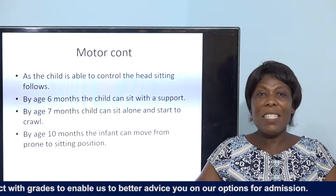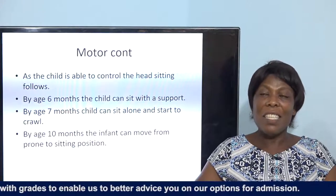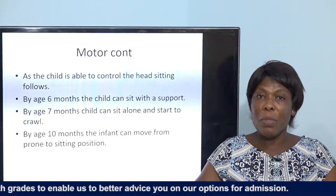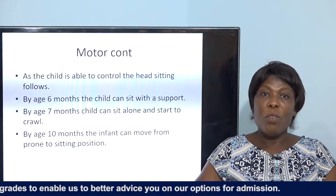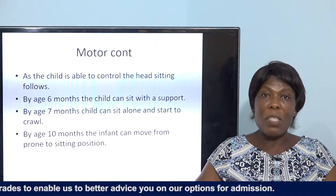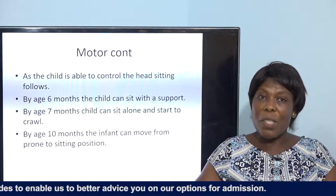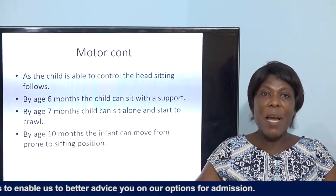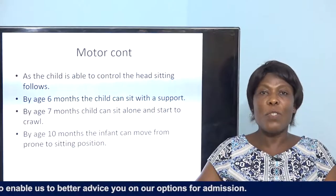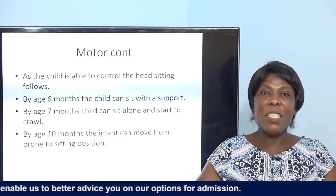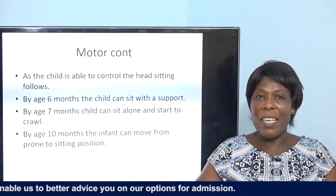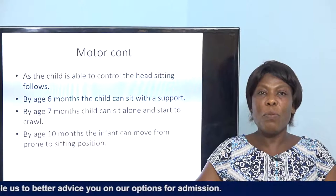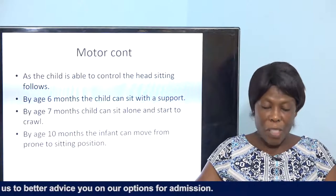As the child is able to control the head, sitting follows — following the principle of orderly and sequential development. The baby is now able to support the head on the neck, then able to sit, then walk. By six months the child can sit with support; by seven months the child can sit alone and start crawling; by ten months the infant can move from prone to sitting position.